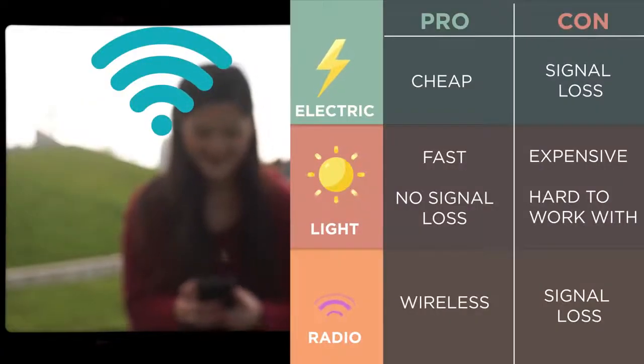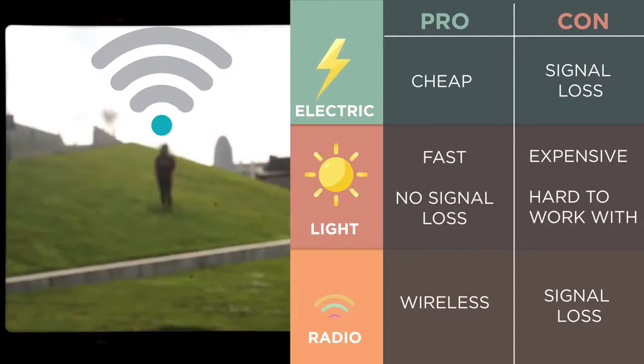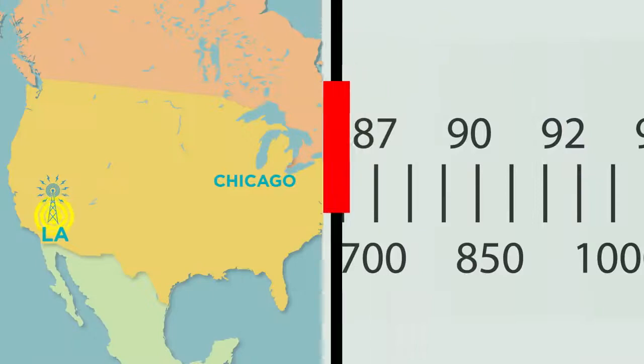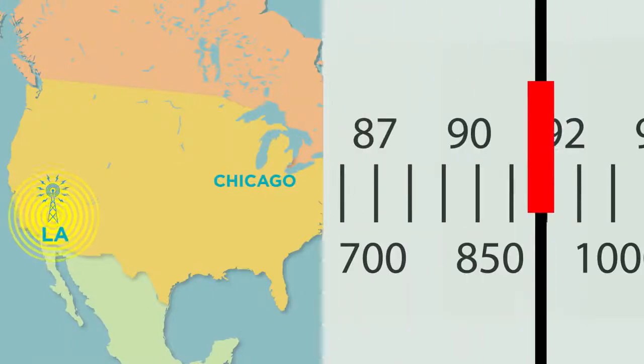So wireless has made our internet mobile, but a radio signal doesn't travel all that far before it completely gets garbled. This is why you can't really pick up a Los Angeles radio station in Chicago.